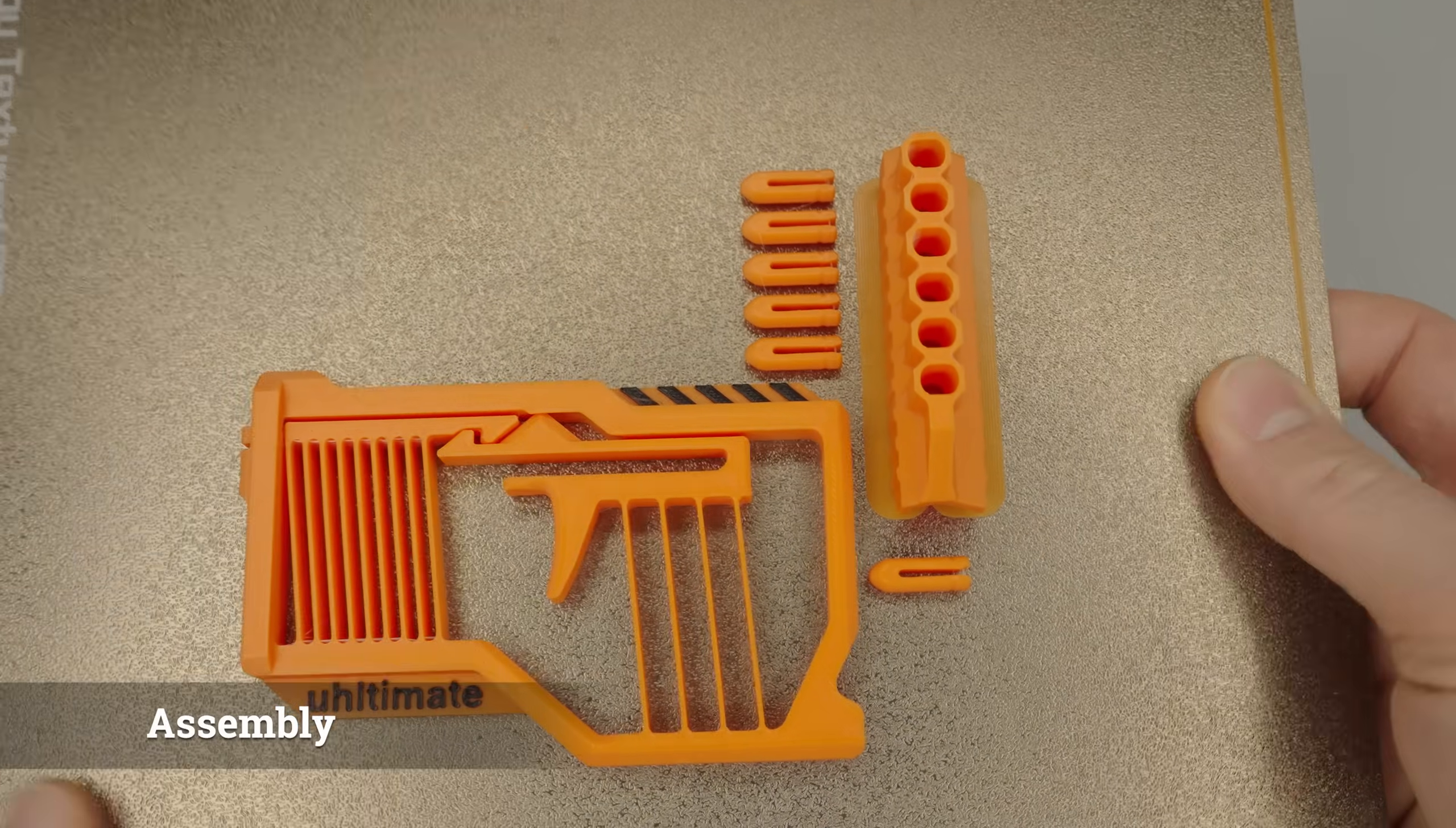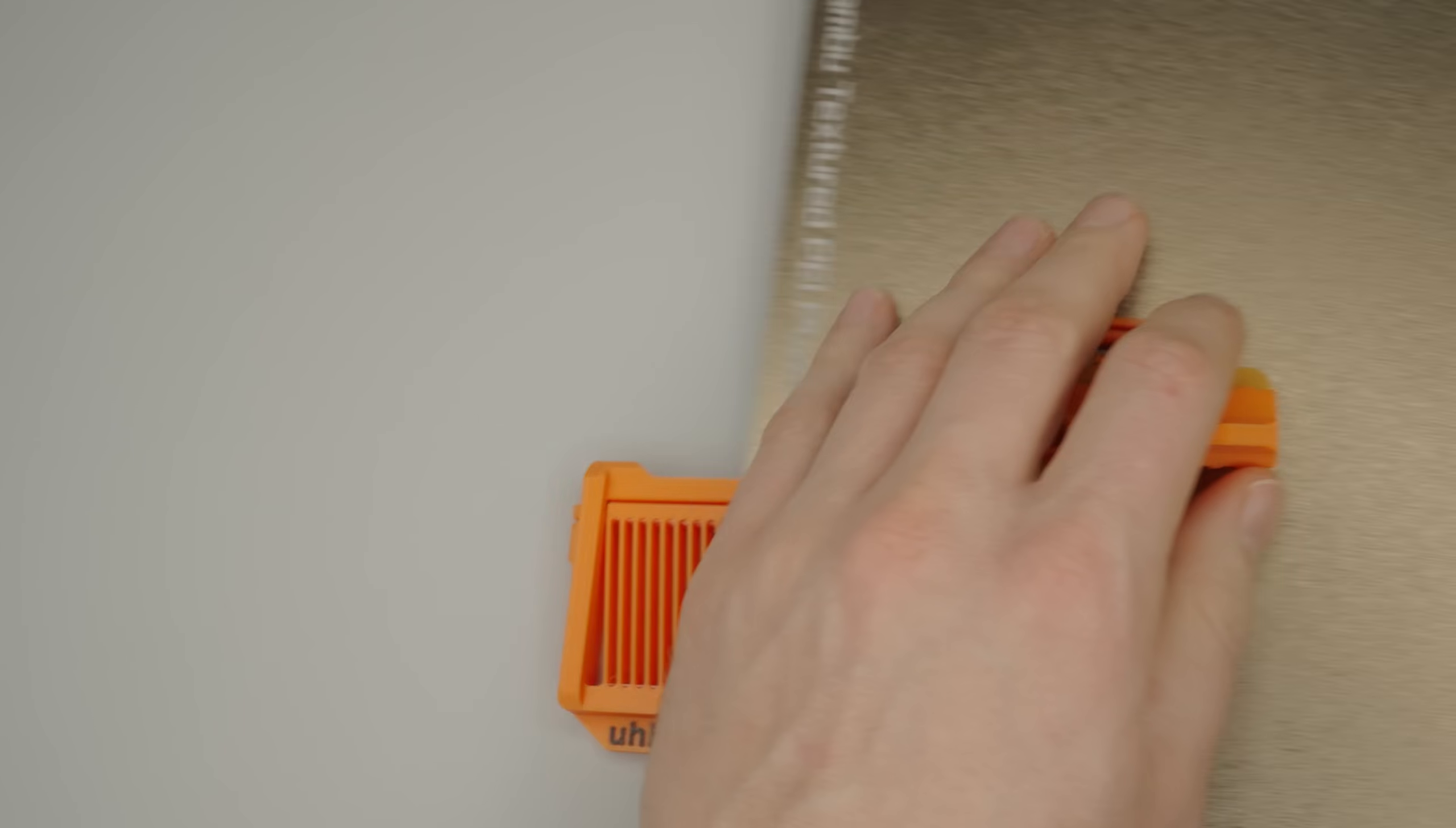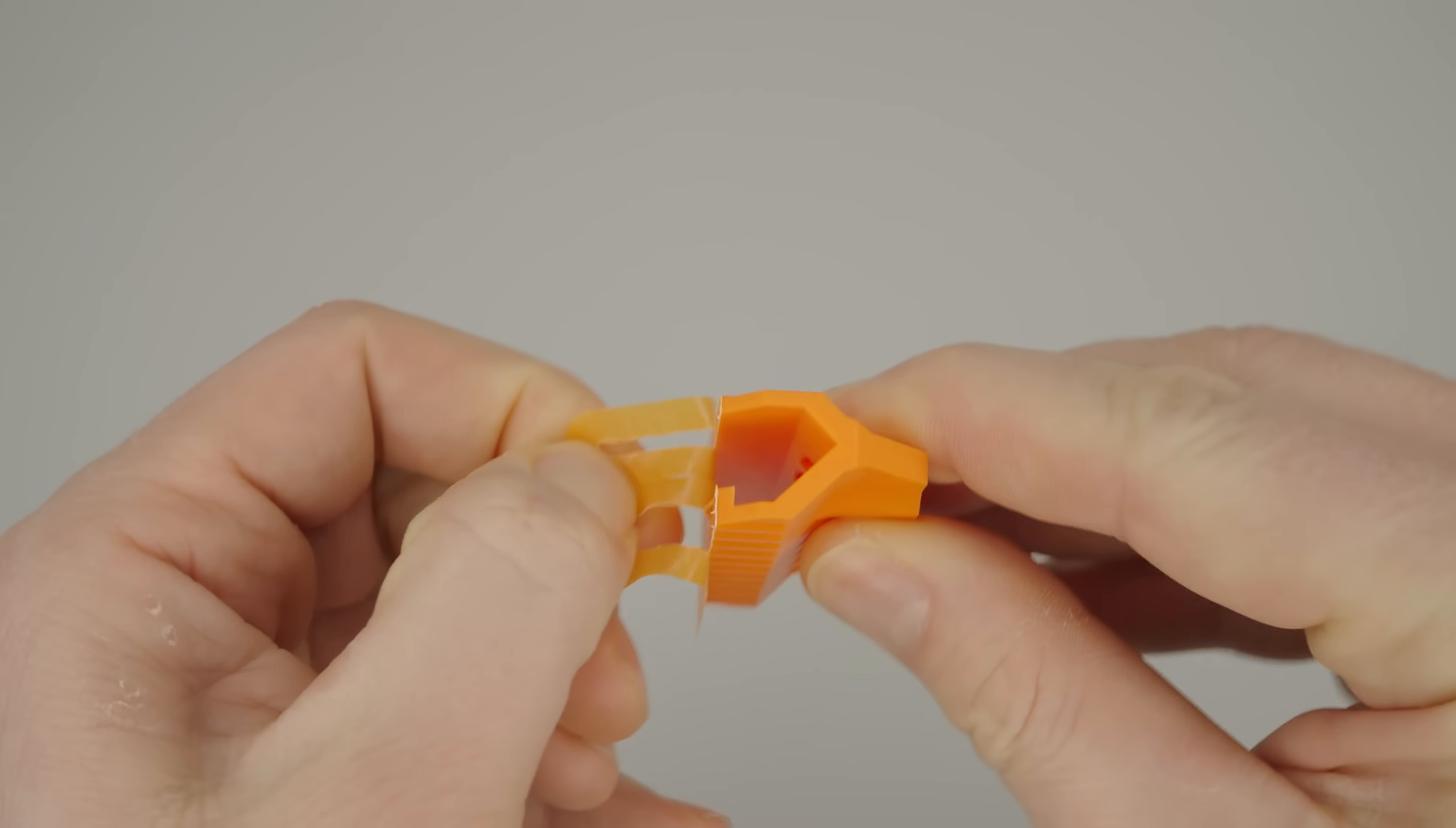Once everything has cooled down, you can take the parts off the print bed. Let's start with the magazine. First, remove the brim. It would have been nice to print without it, but unfortunately, that didn't work well at all.